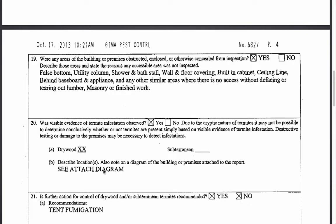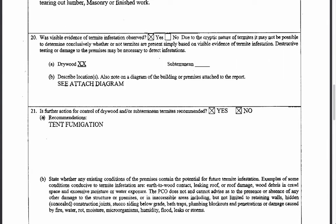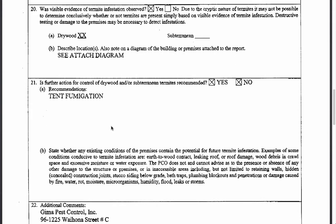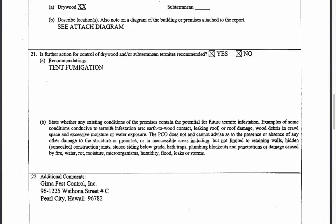The inspector has a diagram attached. For further treatment, it appears he checked yes for dry wood and no for subterranean, with a recommendation of tent fumigation. So for this particular property, the seller had to tent the home prior to closing. This is what you're looking for — what the inspector recommends is what the seller will have to do. As a buyer's agent, you'll know the seller needs to tent. A certificate of completion will also need to be provided to the lender, so you'll need to work with the termite inspection company to obtain that document.